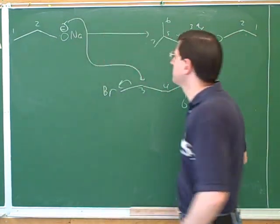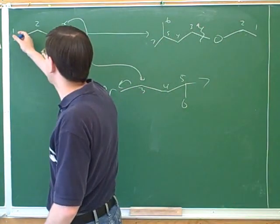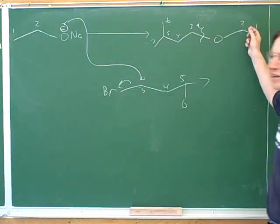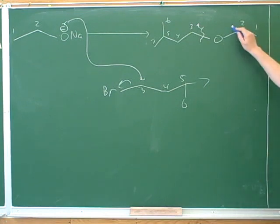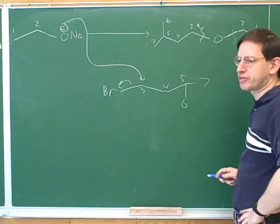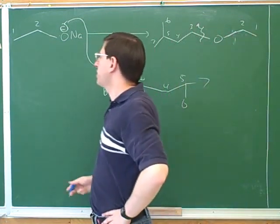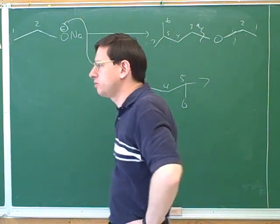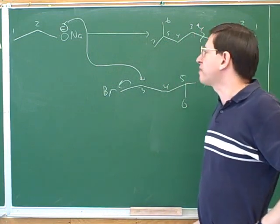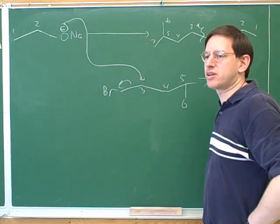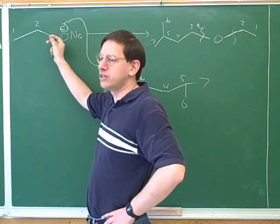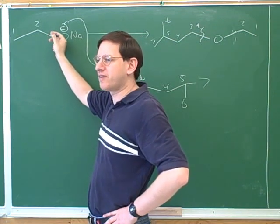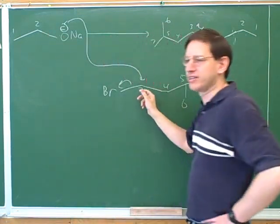It was good that you put numbers in the starting material and the product, and it was good that you guessed number one and two in the starting material corresponded to those carbons. What gave you trouble was putting the squiggles in the wrong place. In the product, we squiggle the bonds that are forming — we're trying to form the bond between the oxygen and number three, not the oxygen-two bond. In the starting material, we squiggle bonds that are breaking. The nucleophile doesn't have a leaving group; it's the electrophile that has the leaving group.